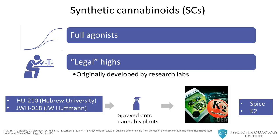Some examples include HU-210 — the HU series being originally developed at the Hebrew University in Israel — and JWH-018 — the JWH series was originally developed by J.W. Huffman. These molecules are sprayed onto cannabis plants. These products are known and sold as Spice and K2.